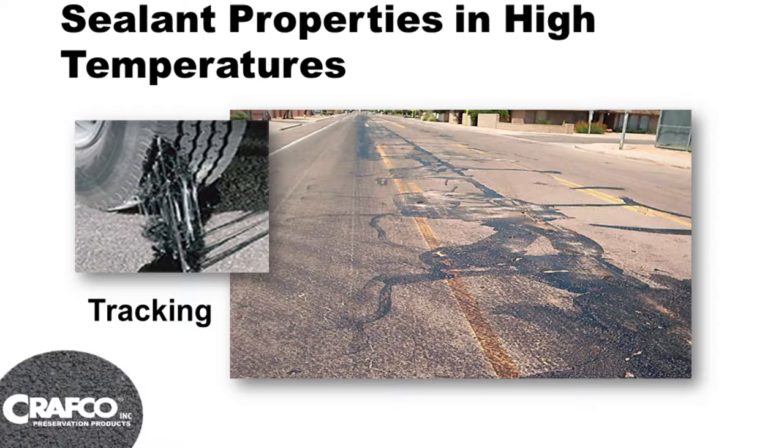The softening point is a really critical value when you're talking about hot climates. The higher the softening point — which is the point at which crack sealant turns from solid back to viscous, becoming tacky and sticky again — the better for hotter climates. In hotter climates, we want a higher softening point. However, the bond test and the softening point are at two opposite ends of the spectrum. A material with a really high softening point usually doesn't have great flexibility, and sealants with really good flexibility have a lower softening point. You can't design a sealant that works well at both ends of the spectrum.